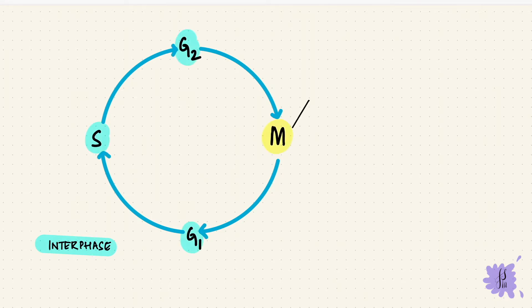The mitotic phase itself has mitosis, which is karyokinesis where the nucleus divides and the chromosomes get distributed to the two new cells. It also has cytokinesis where the cytoplasm divides.